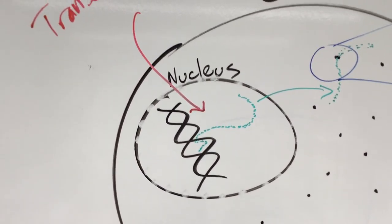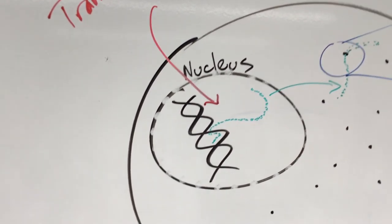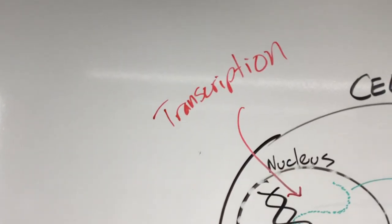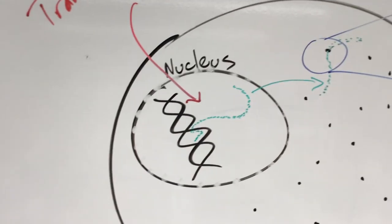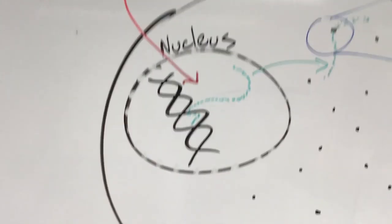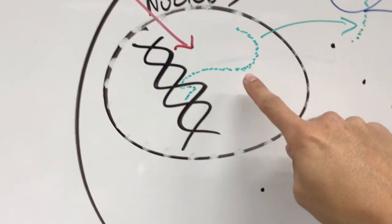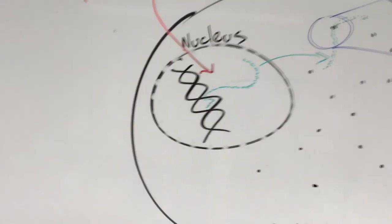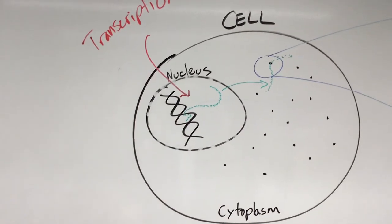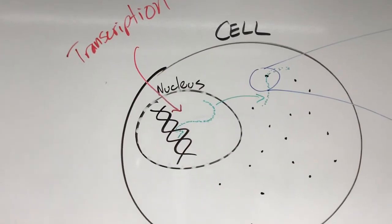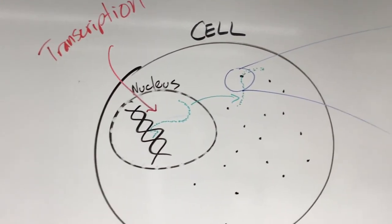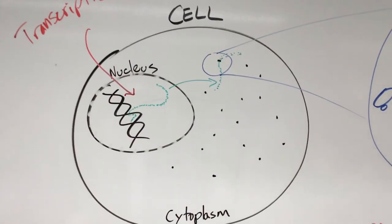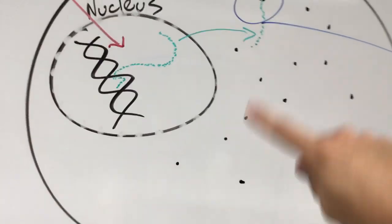So what happens is that genetic code in the form of DNA gets transcribed, process of transcription in the nucleus, gets transcribed into that messenger RNA molecule, that single-stranded genetic code. And it leaves through those little holes in the nuclear membrane, and it enters the cytoplasm, where we have all of these ribosomes hanging around.